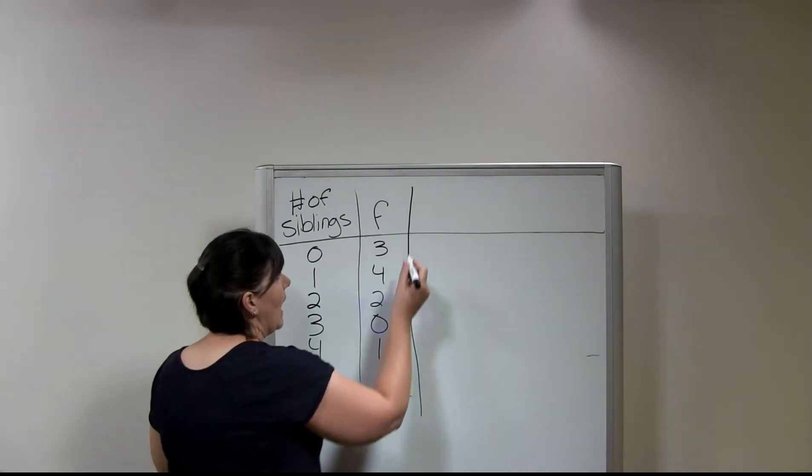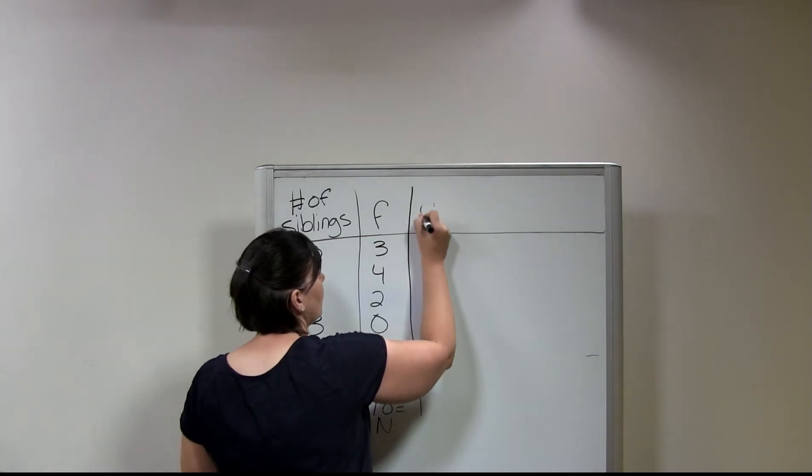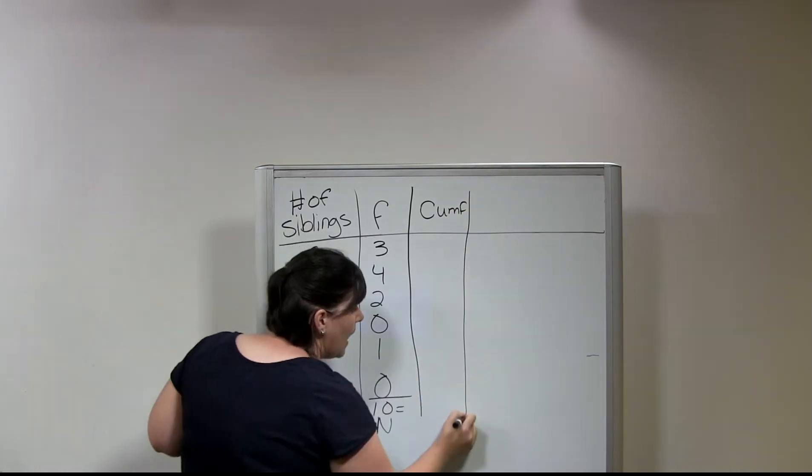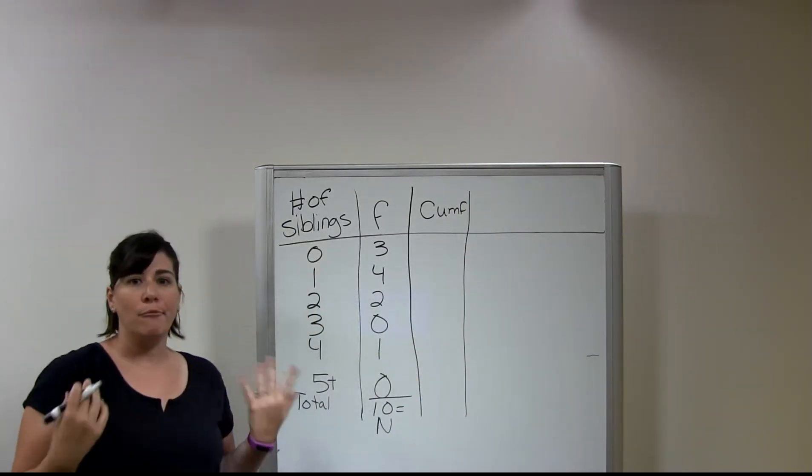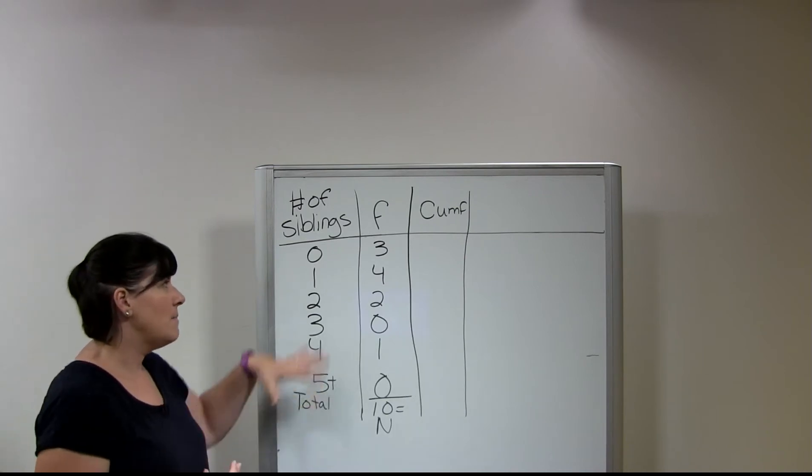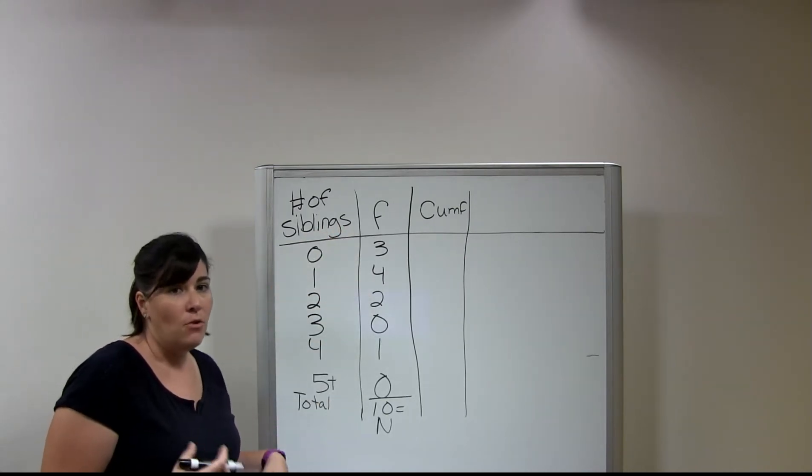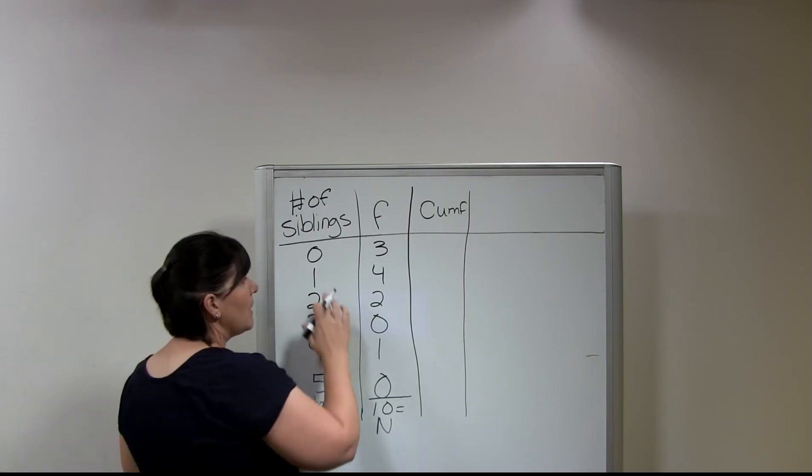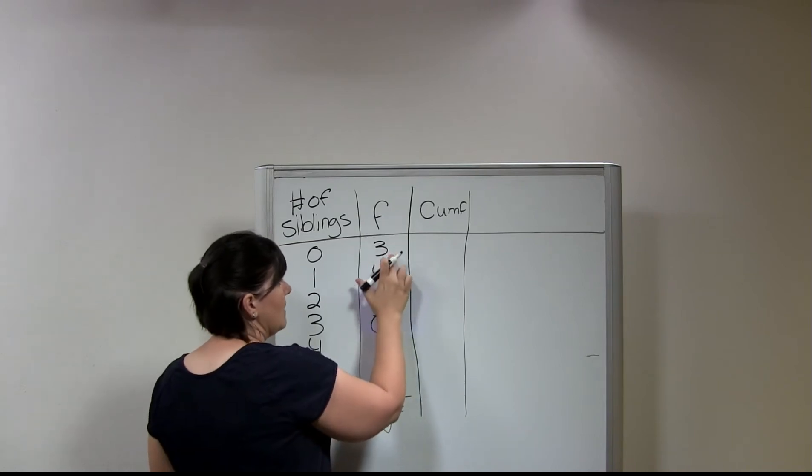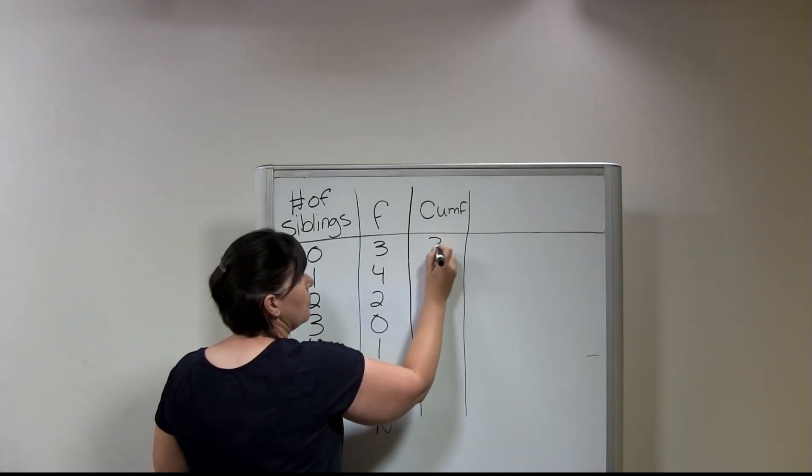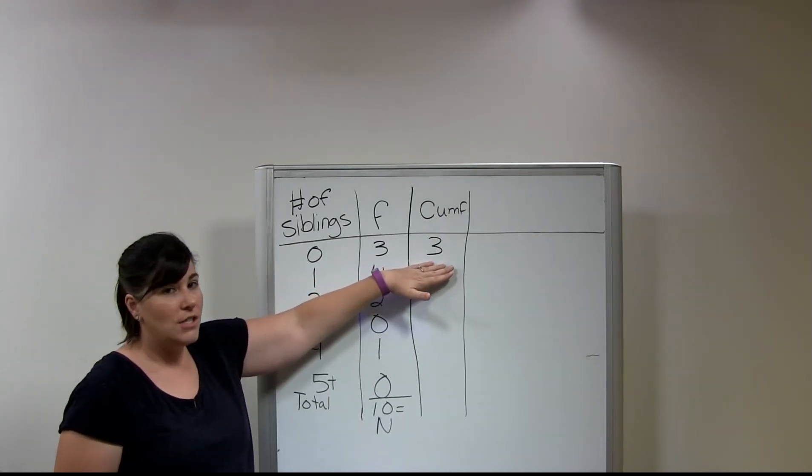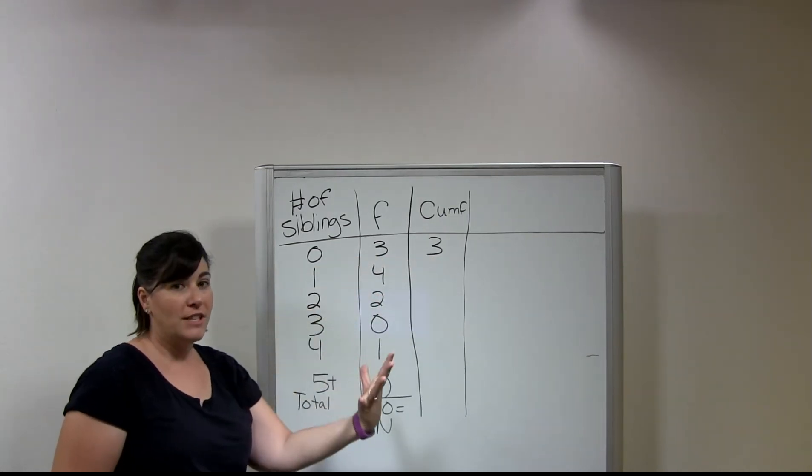So the next column that I'm going to have is my cumulative frequency column, or cumulative F. And this column is what I'll call a running total. So this is just a running total of all of the people in my survey, or my sample. And so I'm going to start my cumulative frequency for the first row, is always the same as the frequency. So here it's going to be three. So our cumulative frequency is just the same as the frequency for the first category.